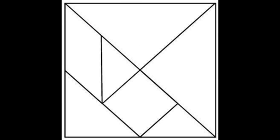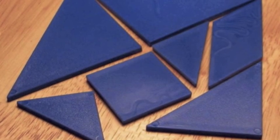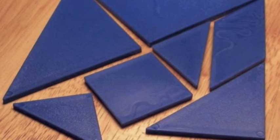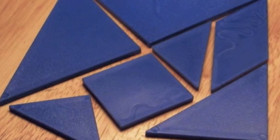Now tangrams can also be used to get an understanding of part to whole. For example, what part of the entire figure is made up of a large triangle? And then you might be able to see, well, a quarter of the large figure or 25%.